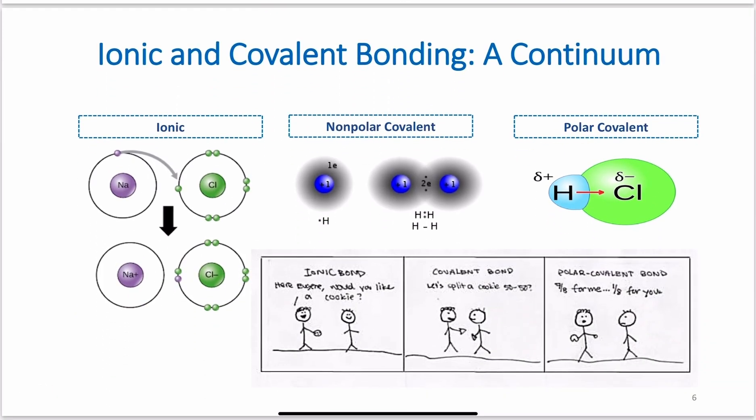So ionic and covalent bonding is a continuum. We say that molecules are ionic or covalent for simplicity, especially for naming simplicity, but the truth is it's not actually true. We could have purely ionic, we could have purely covalent, or we could have somewhere in between, and most atoms actually lie somewhere in between based on their electronegativity, which we're going to talk about very next. But ionic is when we have that full transfer of electron, or electrons. In this case, sodium has given up an electron completely to the chlorine atom forming a sodium ion and a chloride ion.